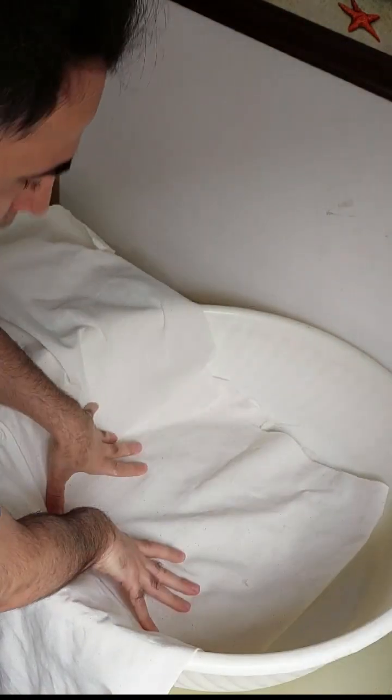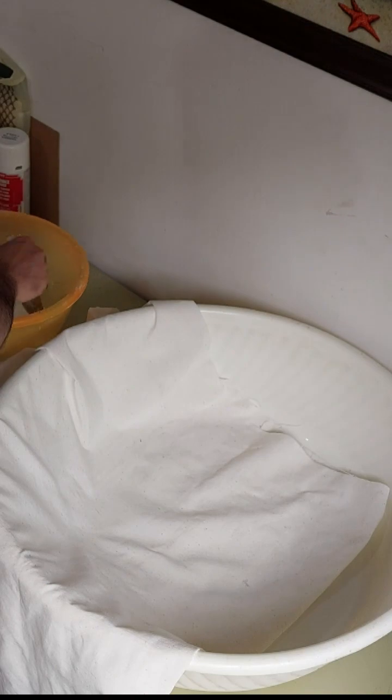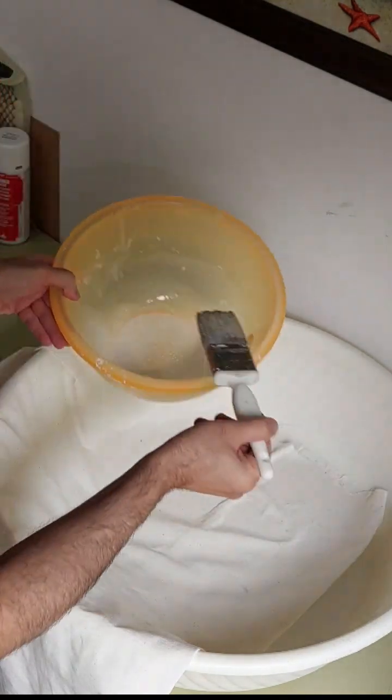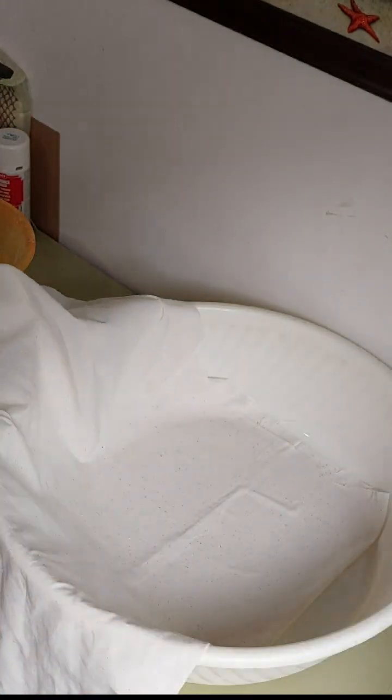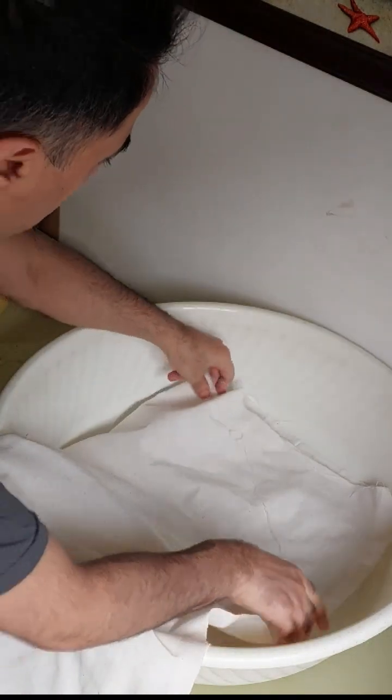When we covered the entire surface with the mixture, we fold the fabric from the width side and place it on the bottom surface and then apply it with a brush. We continue this work until the width of the fabric reaches the end edge.